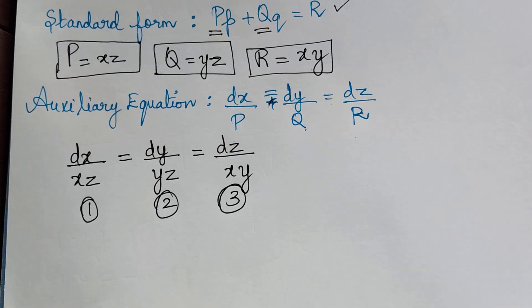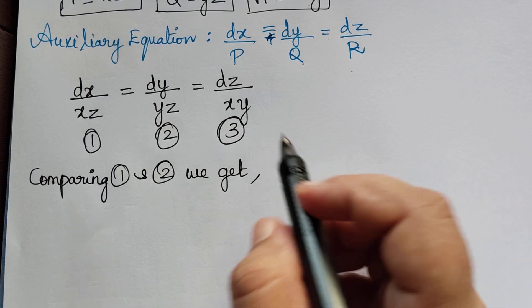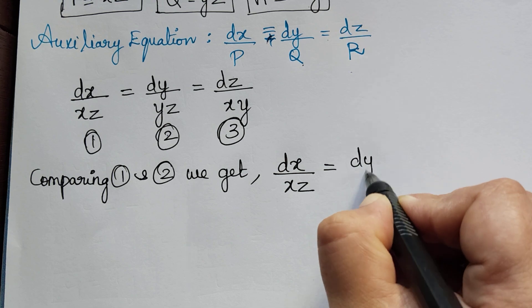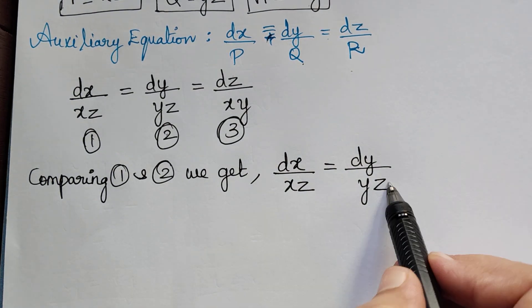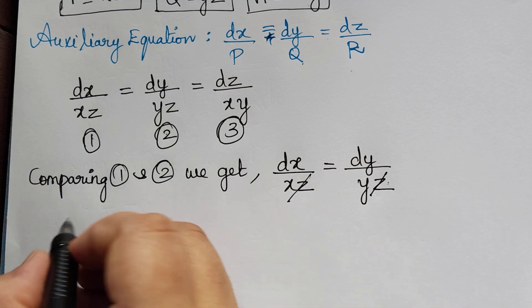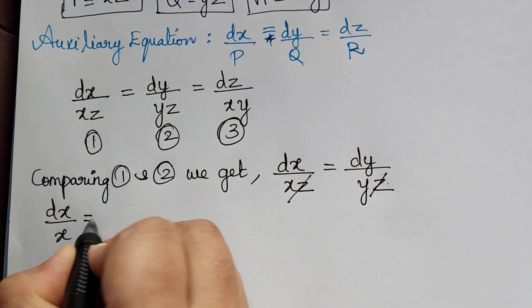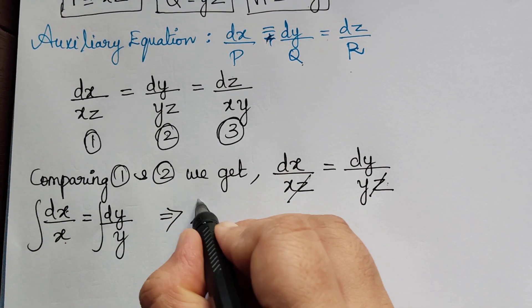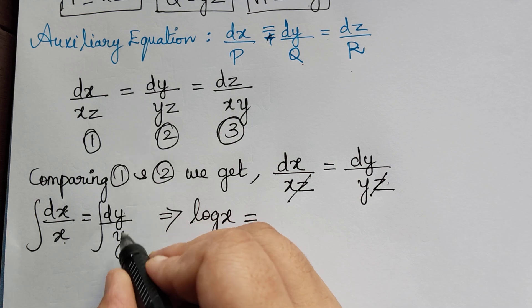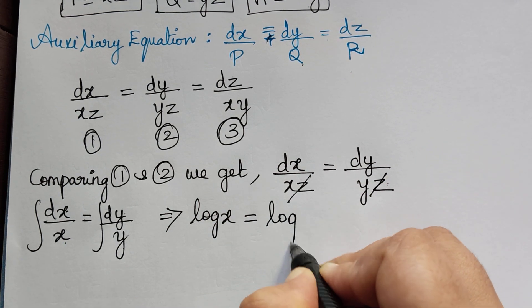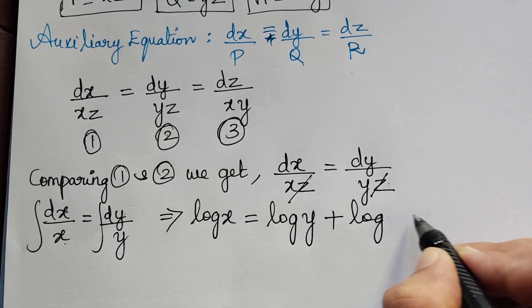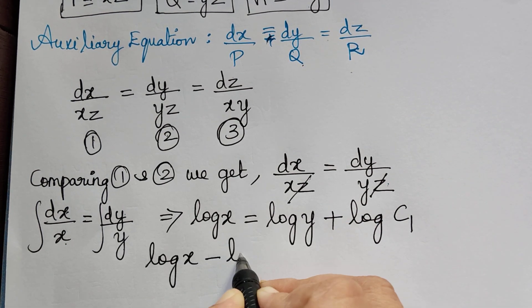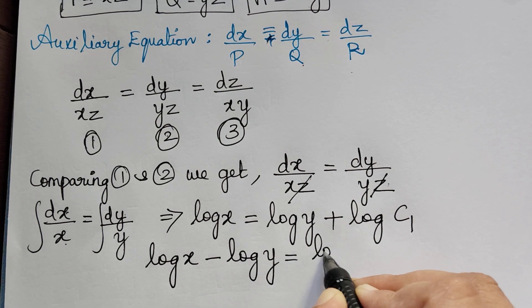Now we shall compare each of these and find the solution. Comparing equations 1 and 2, we get dx by xz is equal to dy by yz. We can cancel z on both sides, giving dx by x equal to dy by y. Integrating both sides: log x is equal to log y plus a constant, which should be log c1. Taking log y to the left, we have log x minus log y equal to log c1.